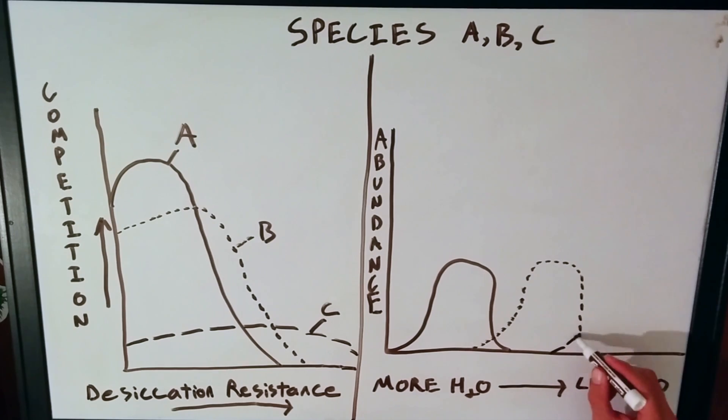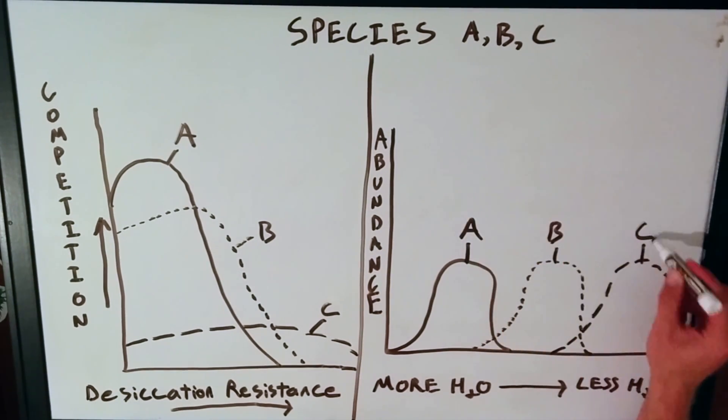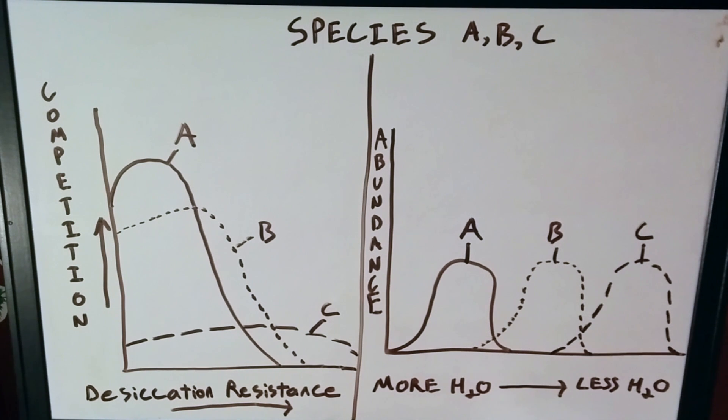Last but not least, species B occupies the mid zone because it can resist desiccation more than A but is not as good a competitor. It cannot survive in the high intertidal zone because it cannot withstand being out of the water for long periods of time like species C.